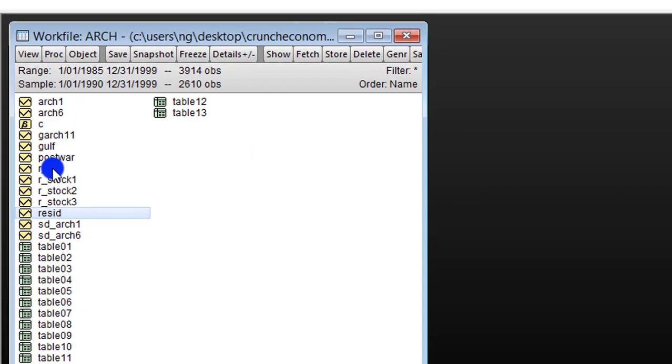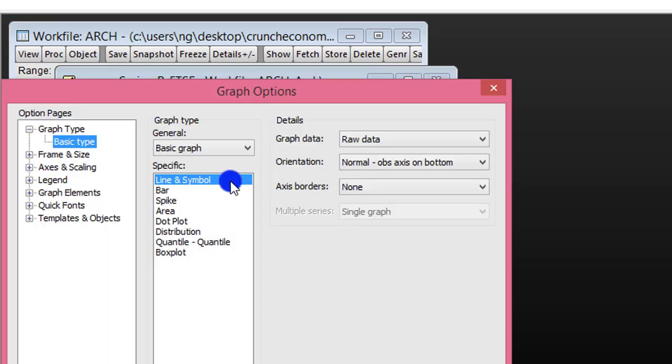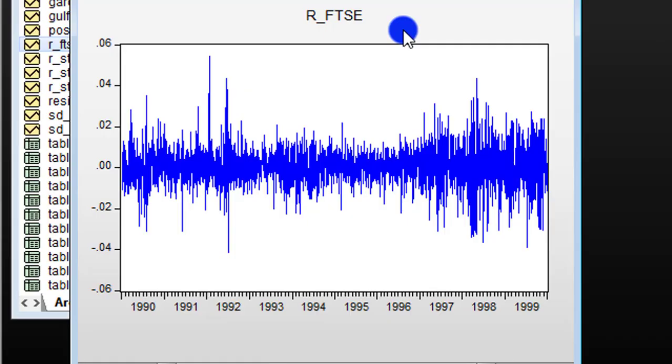Here in EViews, having loaded the data, the second step for me is to plot the series for visualization. The series I'm using is the returns to FTSE stock. I double-click on this, go to View, Graph, Line and Symbol. Using the raw data, I'm not changing anything here. I click OK.